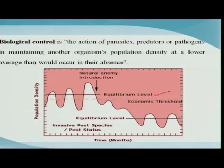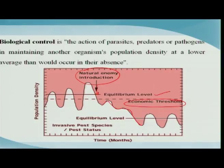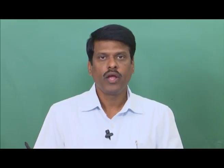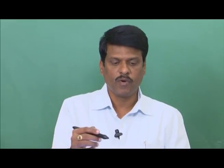With this graph we can understand better. We know about the general equilibrium level of the pest, and whenever the general equilibrium position goes beyond the economic threshold level it becomes pestiferous. At this point, when you introduce a natural enemy, these natural enemies act upon individuals of the pest and bring down the population to a modified equilibrium level, normally below the economic threshold level. Our main aim is to bring the population down below the economic injury level.